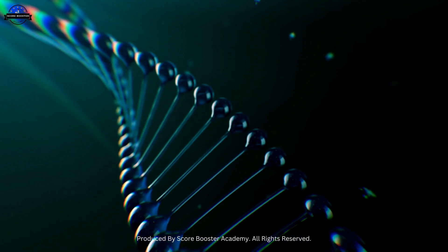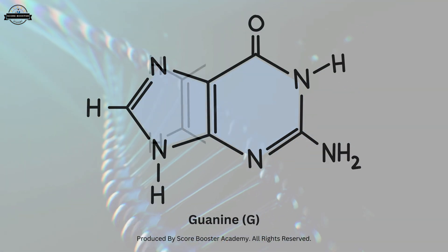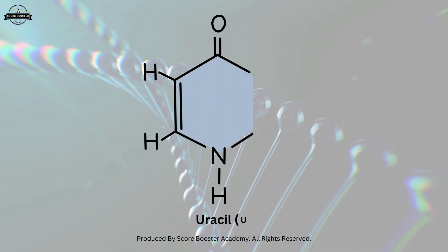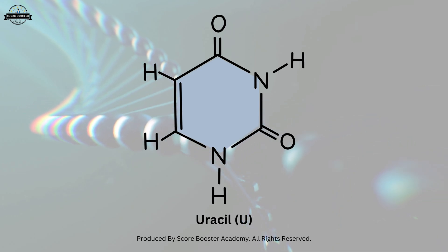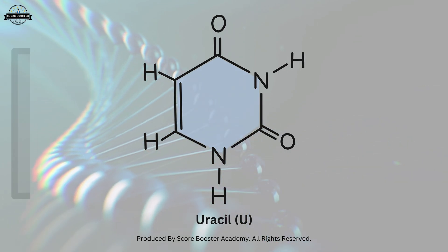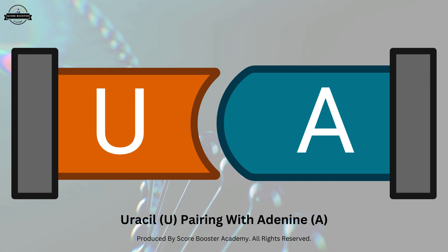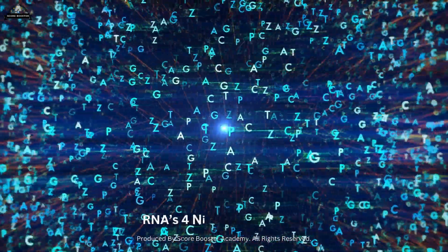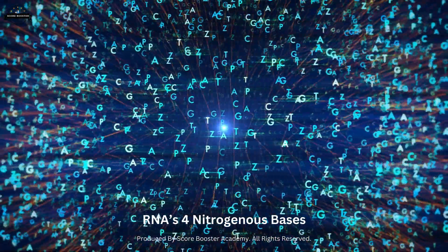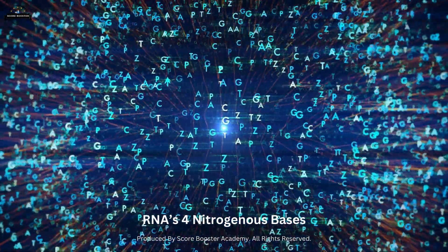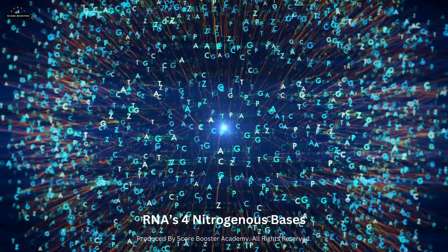RNA has four nitrogenous bases: adenine, guanine, cytosine, and uracil. Unlike DNA, which uses thymine, RNA uses uracil to pair with adenine. These bases are essential for storing genetic information and facilitate the base pairing interactions that underlie RNA's functions.